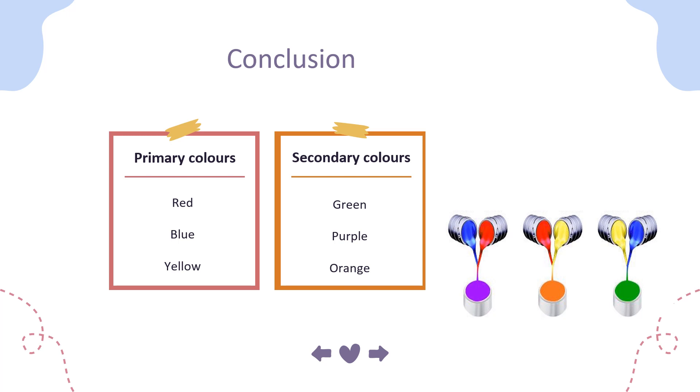To conclude our lessons today, we have learned about two types of colors. The first one is the primary colors: red, blue, and yellow. And we have the secondary colors: green, purple, and orange.